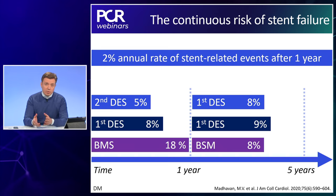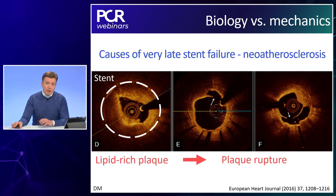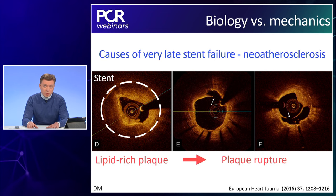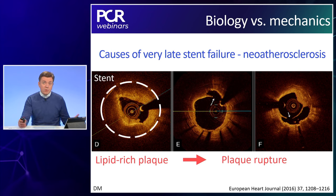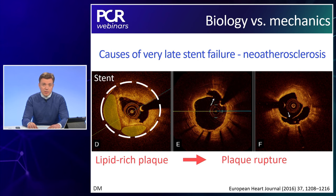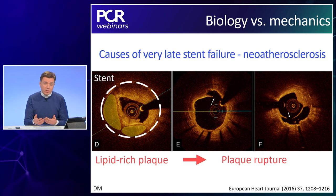We will keep seeing stent failure in our cath labs as we treat more and more patients. We need to differentiate between biology and mechanics when treating these patients. Very late stent failure — as in this case, 18 months after the first stent implantation — could be due to neo-atherosclerosis. You can see the stent marked in white with pools of lipid within it, a new plaque formed within the old stent, which can then progress to rupture and result in a STEMI.